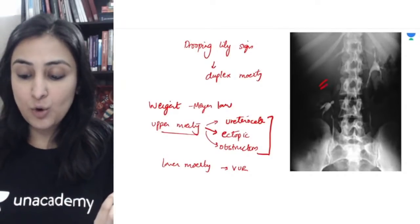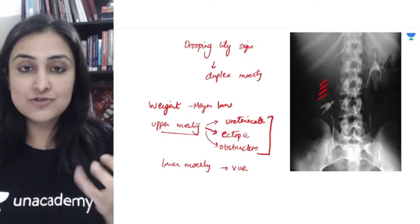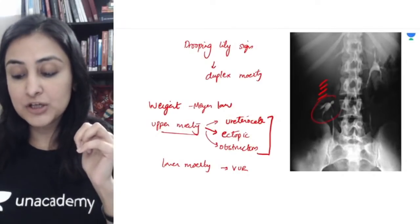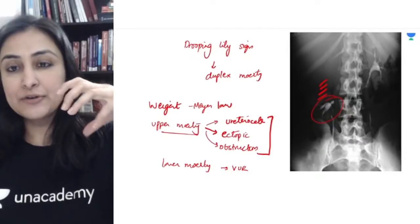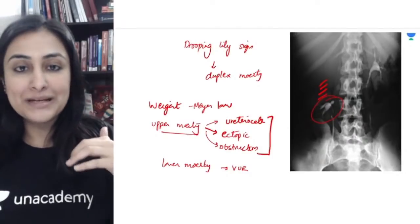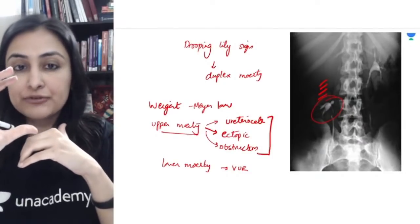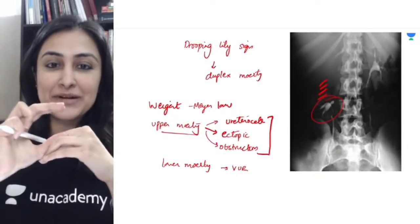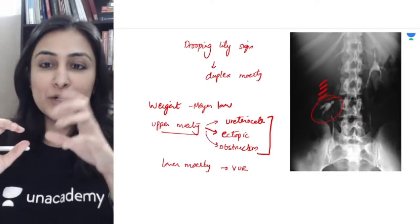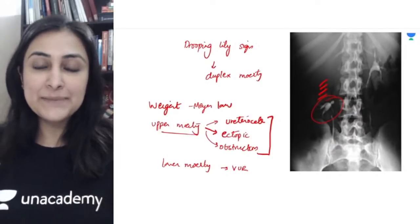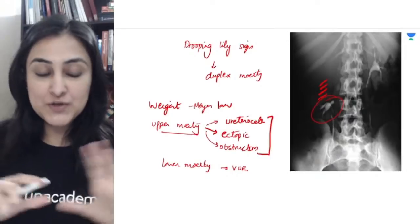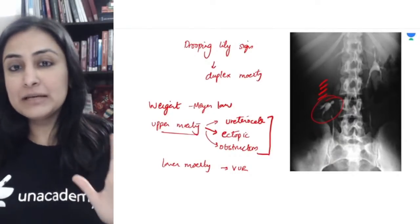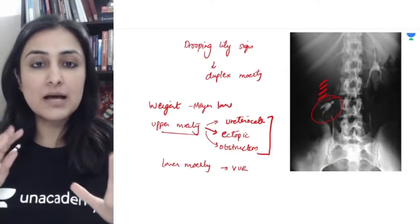Because of obstruction, ectopic insertion, and ureterocele, the upper moiety a lot of times becomes non-functional. What you are not seeing is the non-functional upper moiety, which is compressing on the lower moiety. That is why it forms this drooping lily — I am not seeing half the moiety, and it is compressing on the lower moiety, leading to this drooping lily sign.